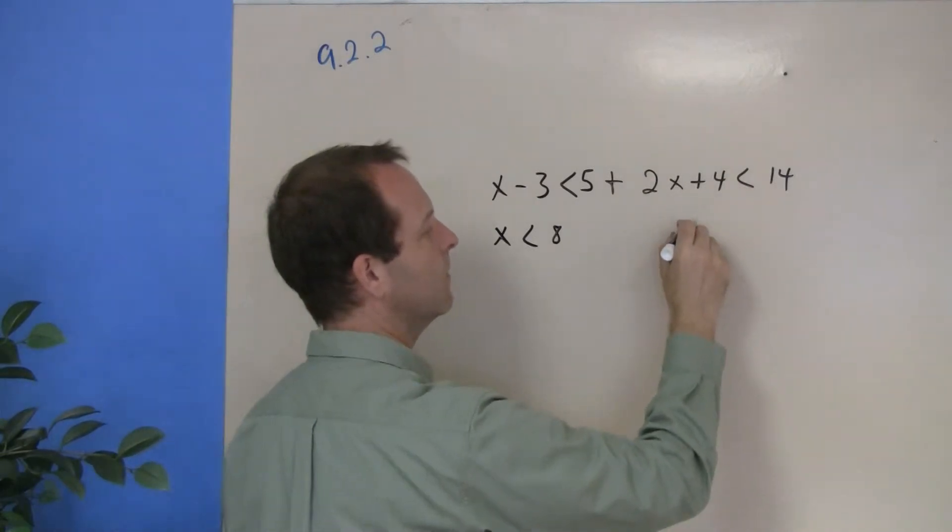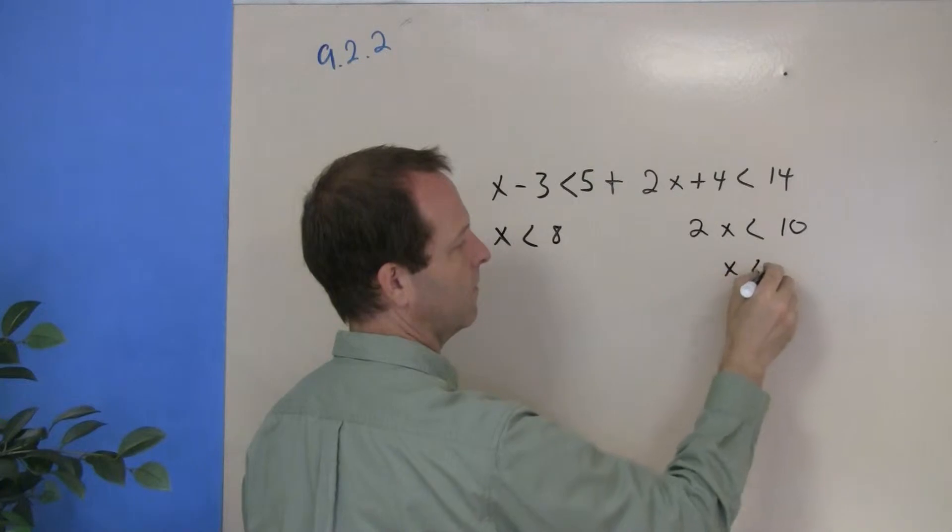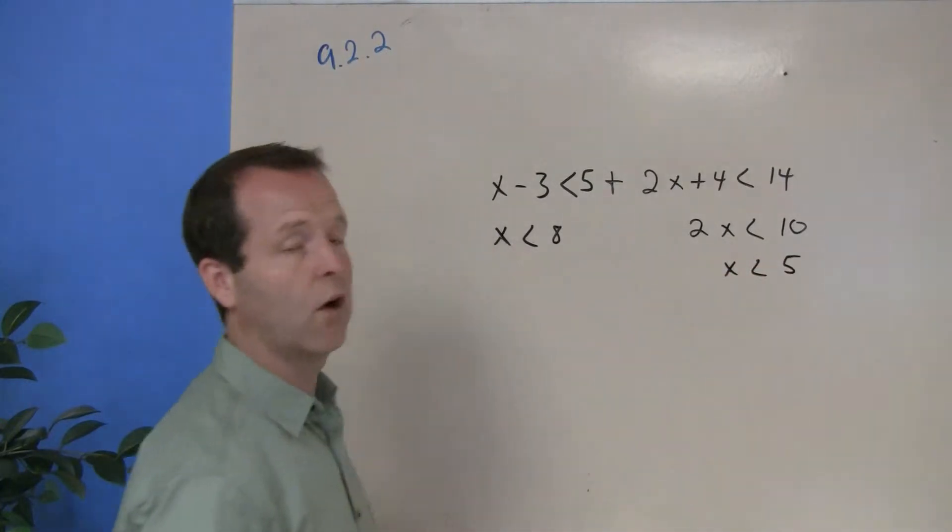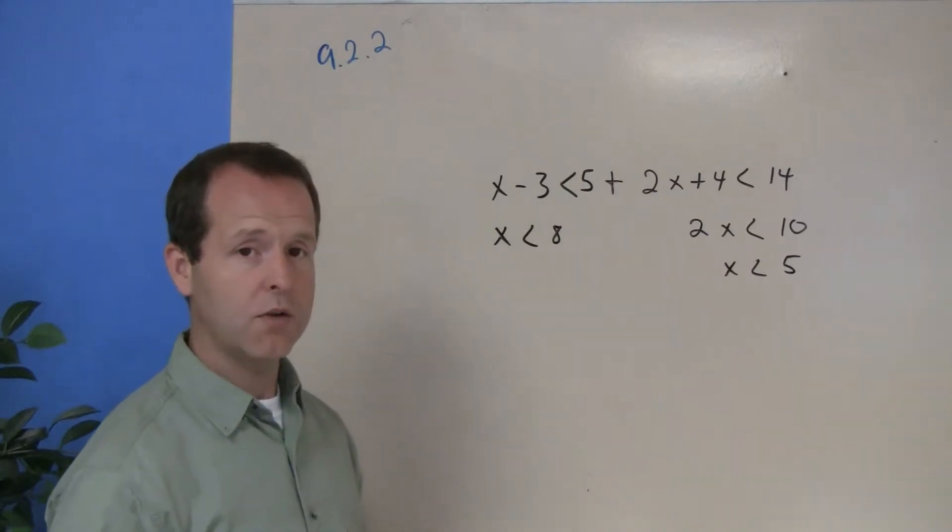This one over here, it is true for all x's less than 5. So what values are common to both of those?